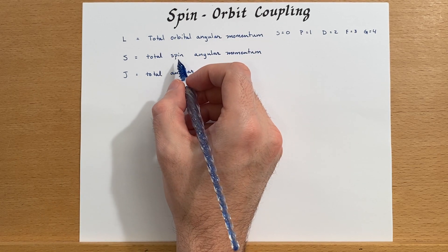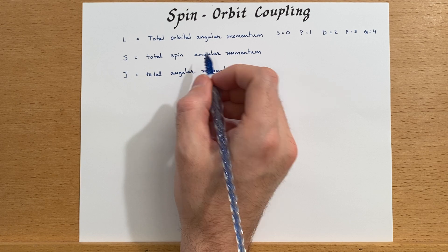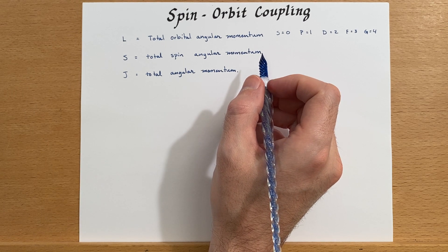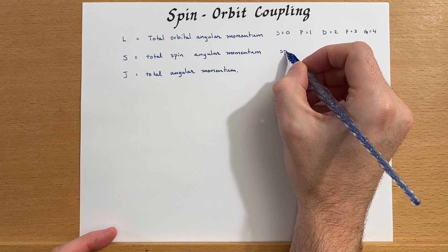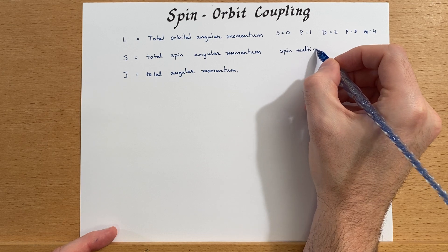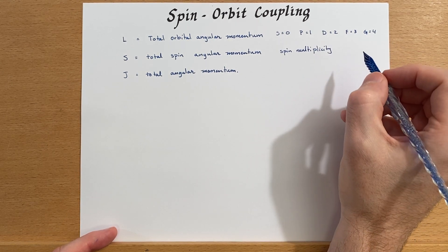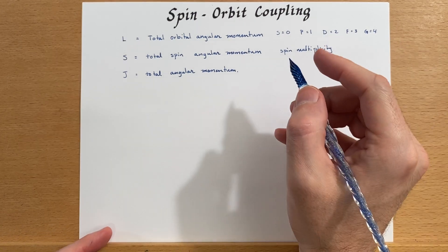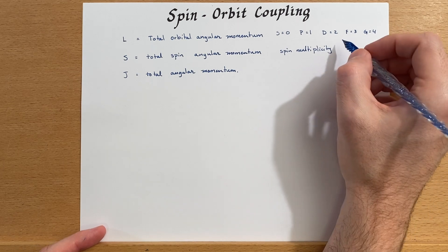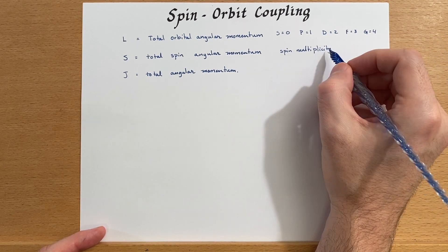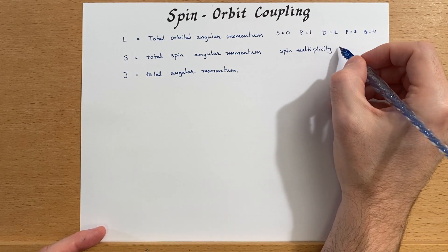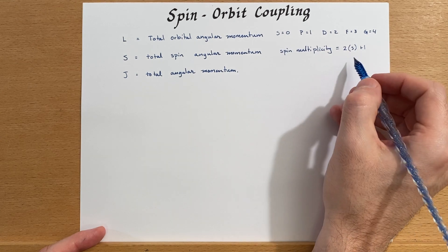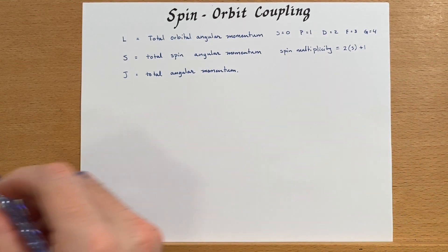S is the total spin angular momentum quantum number, and we determine S by looking at the spin multiplicity. Spin multiplicity is your singlet, doublet, triplet, quartet — that was the superscript on the free ion terms we had at the beginning. The formula is two times S plus one equals the spin multiplicity. We'll do some examples of determining that in just a second.